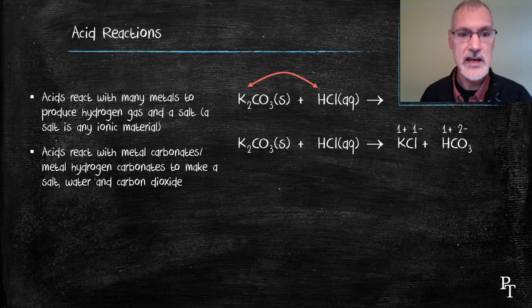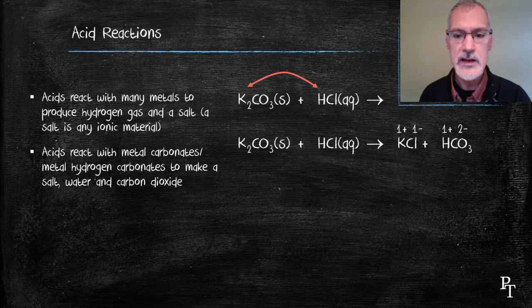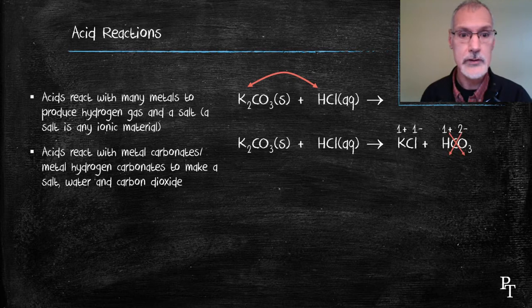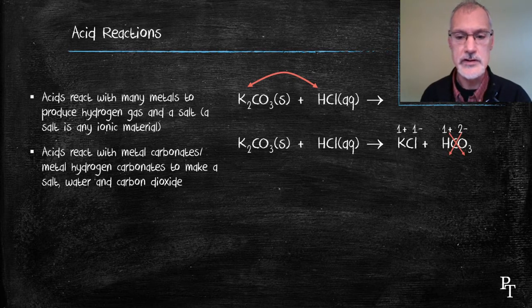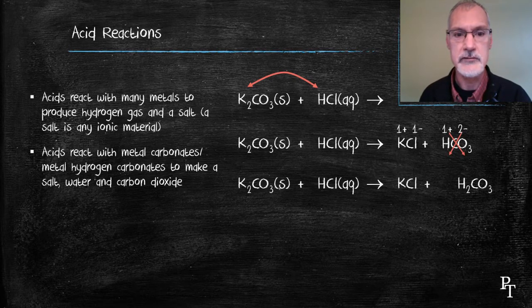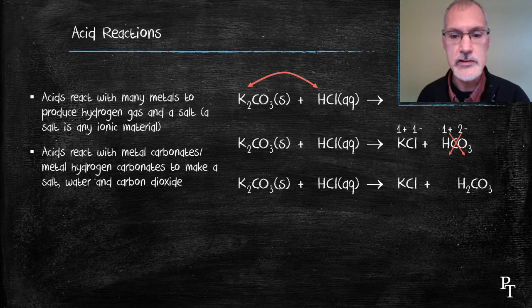Again, I'm going to check their charges. In the case of potassium chloride, the plus one minus one balance perfectly. However, the hydrogen and the carbonates don't balance. So, again, I'll apply the crisscross rule or balance their charges and I will get the formula then for the hydrogen carbonate is H2CO3.